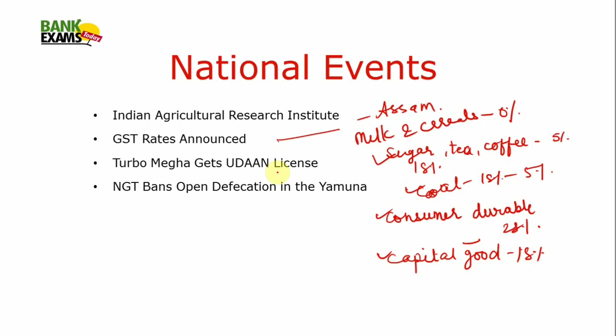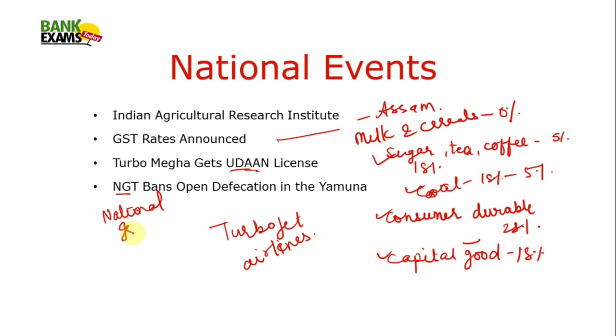Turbo Mega got the Udaan license, becoming the first private airways to get the Udaan license — Turbo Mega operates under Turbojet Airlines. The National Green Tribunal (NGT) banned open defecation in the Yamuna river water to protect it from pollution, with a fine of Rs. 5,000 imposed on violators.